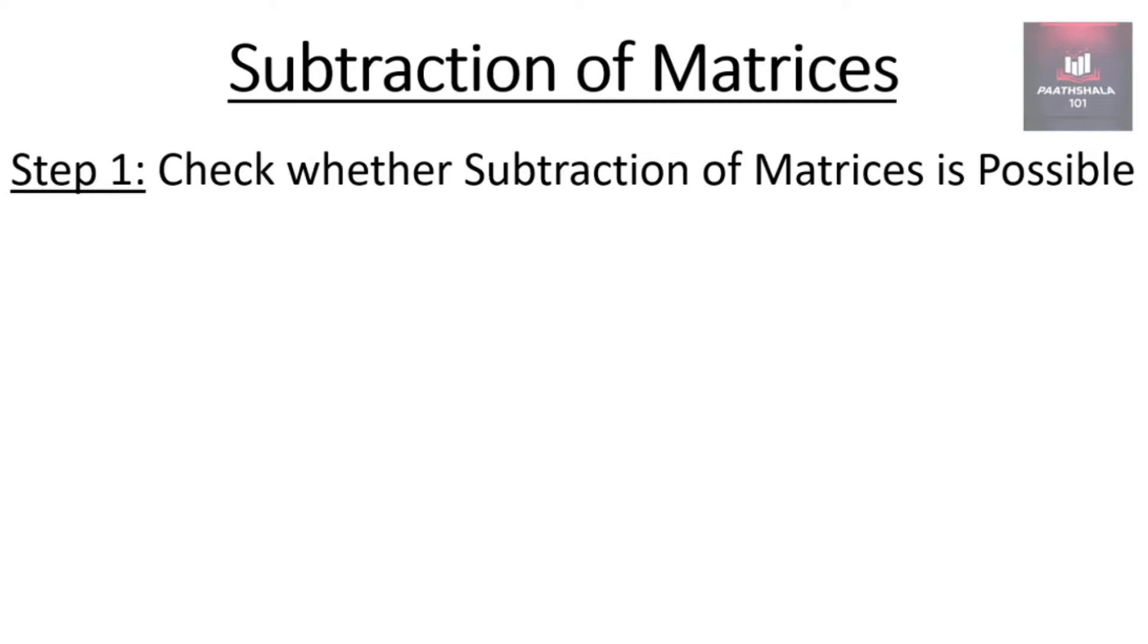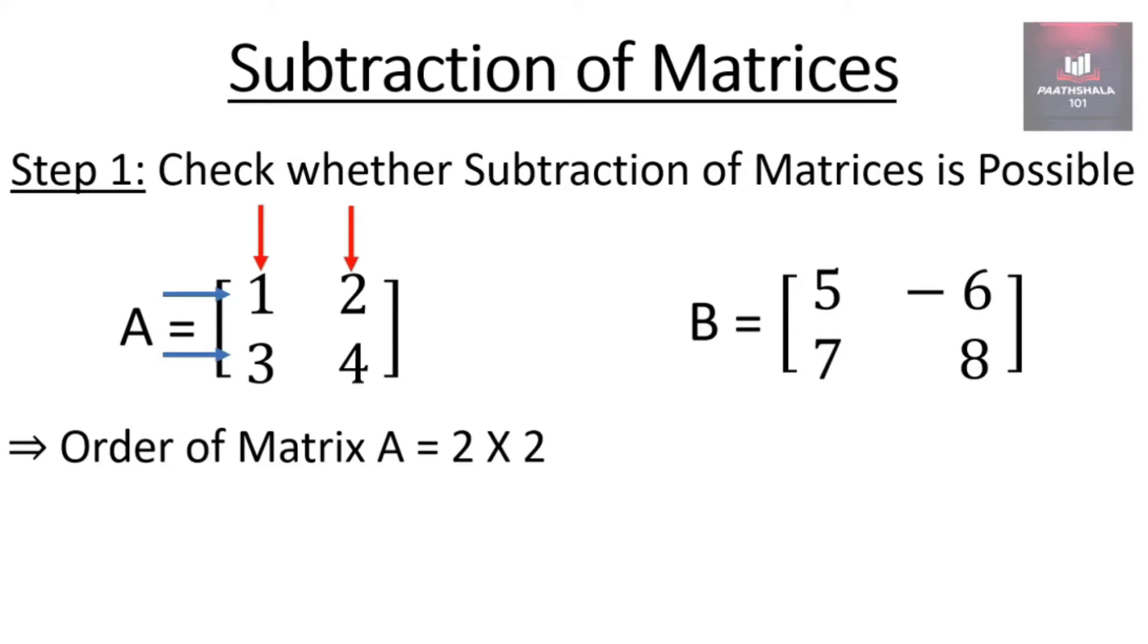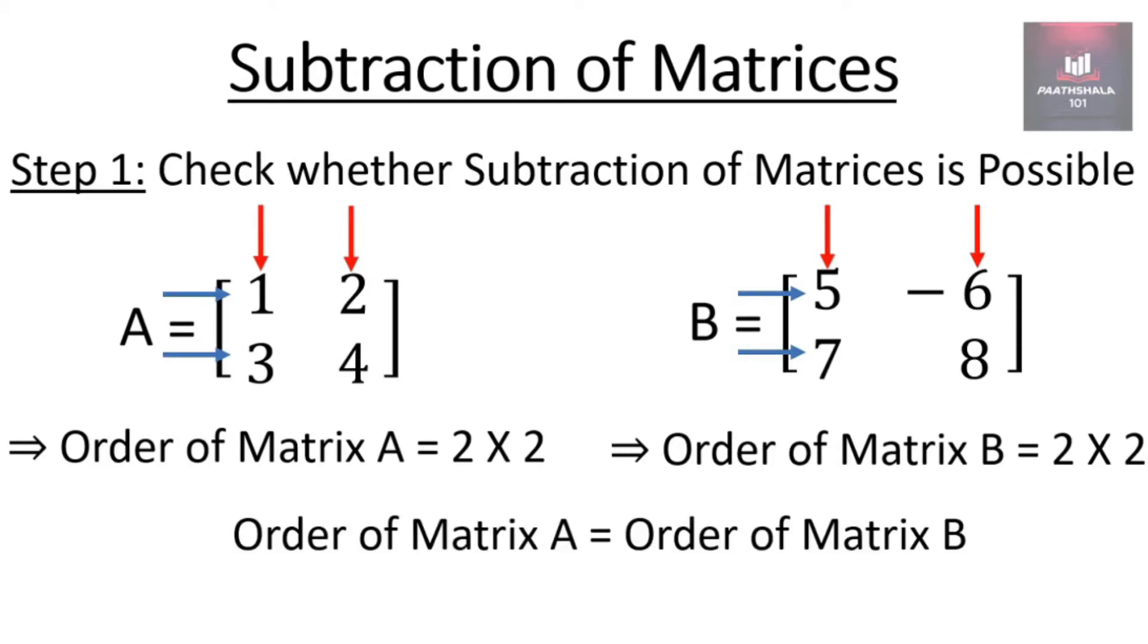First we will check whether the subtraction is possible or not. A is a matrix which has two rows and two columns, so order of matrix A is 2 cross 2. B is a matrix which is having two rows and two columns, so order of matrix B is 2 cross 2. As order of matrix A is equal to order of matrix B, so subtraction is possible.